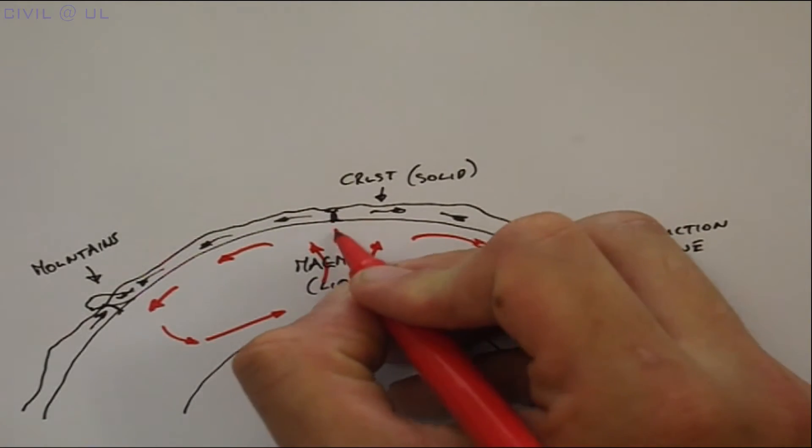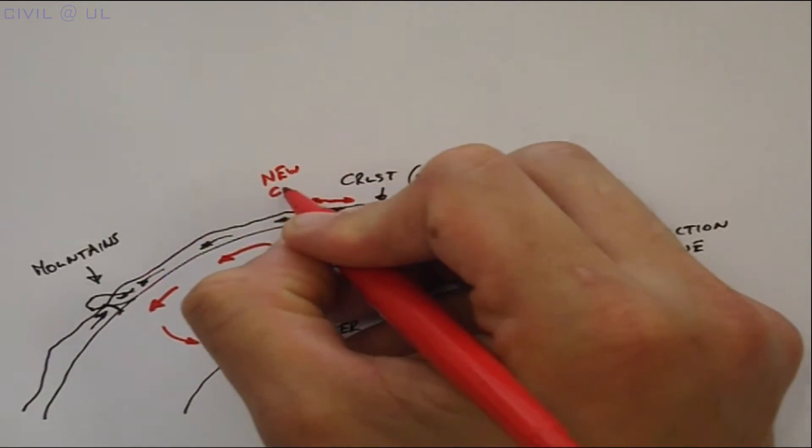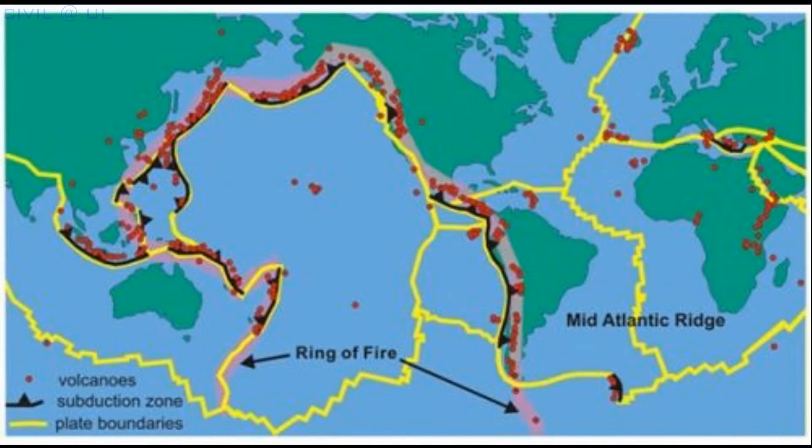Conversely, when the crust splits and moves apart, we get the release of molten magma and the formation of new crust, similar to what's currently happening along the Mid-Atlantic Ridge.